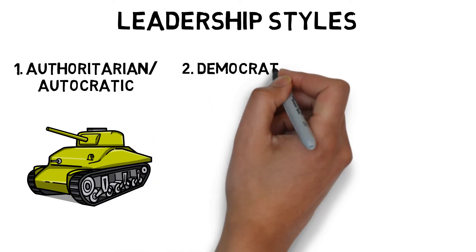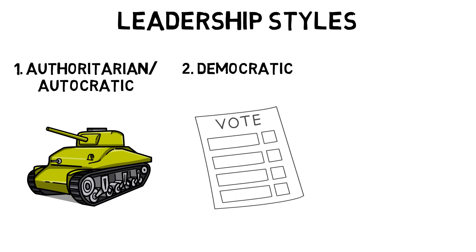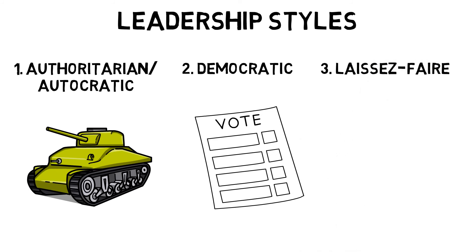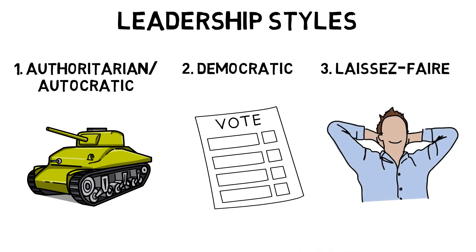Democratic leaders listen to the advice of others and encourage group discussions. This is an informal and relaxed approach — when the leader is absent, the group will continue to work. These types of leaders are most effective in individual sports and when the performer is experienced and when decisions do not have to be made quickly. A laissez-faire leader adopts a passive role and leads the group to look after themselves. Members of the group may become aggressive towards each other when things go wrong.